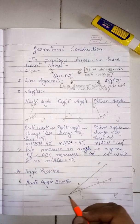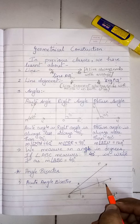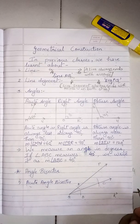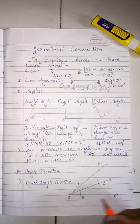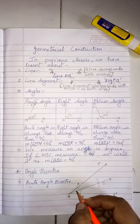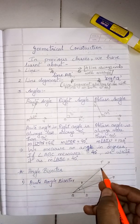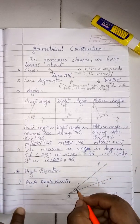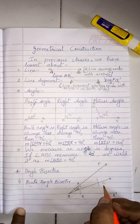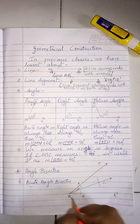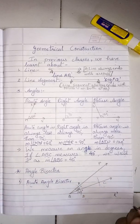Now you can see QC is the angle bisector which divides angle PQR into two equal parts. So angle PQC will be 20 degrees and angle CQR will be 20 degrees.